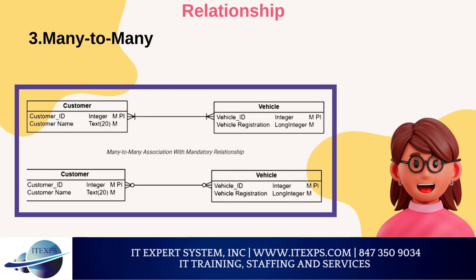Many-to-many: This type of cardinality occurs when multiple instances of one entity can relate with more than one instance of another set of entities. Imagine a scenario in which a customer could select multiple vehicles, and a vehicle could be leased by multiple customers within a certain time period. In the crow's foot notation, a many-to-many relationship is depicted by crow's feet at both ends of the relationship line.